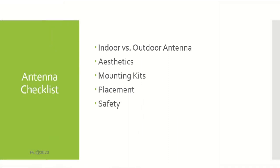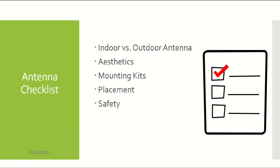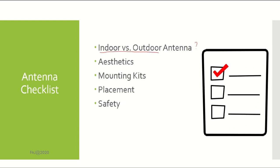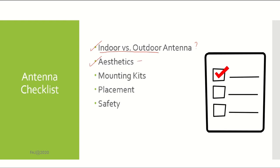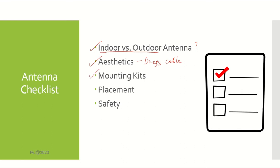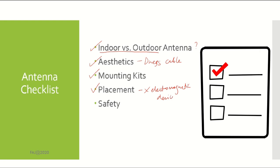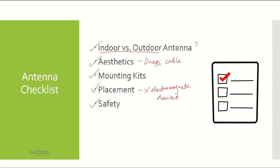First, identify whether you want to install an indoor or outdoor antenna. Next, don't forget the aesthetic factors — for example, make sure you dress the cable to avoid a messy appearance. Identify the right mounting kits to support the antenna. The fourth consideration is placement — you need to identify a suitable place to install your antenna, and try to avoid installing your antenna near electromagnetic devices because it can cause interference. The last consideration is safety — when deciding on an antenna, put safety first.